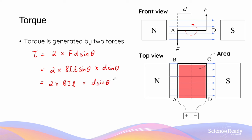I've chosen to leave theta as it is because the angle between the force vector and the armature will not always remain at 90 degrees — it changes throughout the rotation. We can rearrange this equation into the following form.